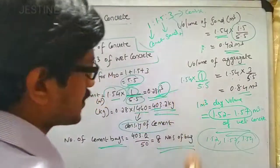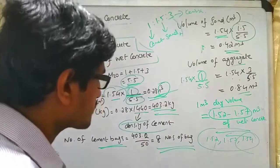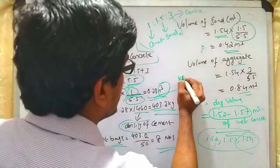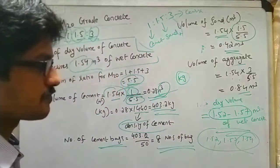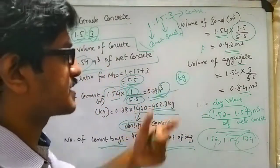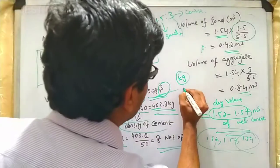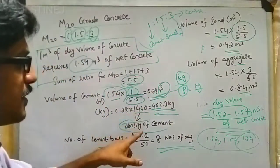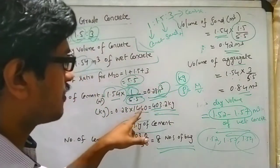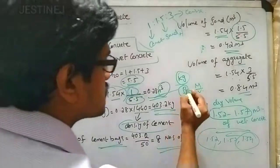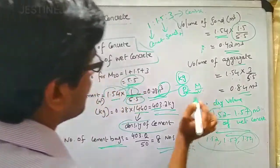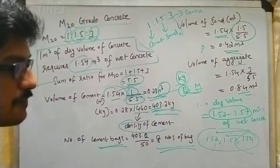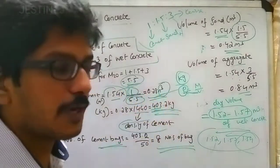If you want to calculate this in kilograms, sometimes questions require the quantity to be represented in kilograms. We must know that density equals mass divided by volume. The density of cement is 1440 kg/m³, so density multiplied by volume will give the mass in kilograms, which is 403.2 kilograms.